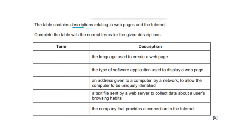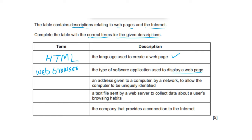Complete the table with the correct term for each description. The language used to create web pages — HTML (hypertext markup language). The type of software application used to display web pages — web browser. An address given to a computer by a network that allows it to be uniquely identified — IP address. A text file sent by a web server to collect data about users' browsing habits — cookie. The company that provides a connection to the internet — ISP (Internet Service Provider).